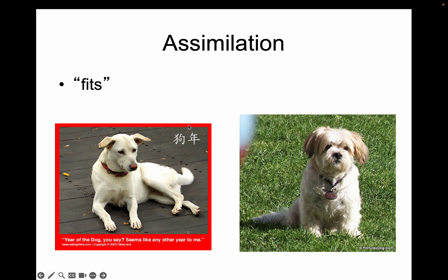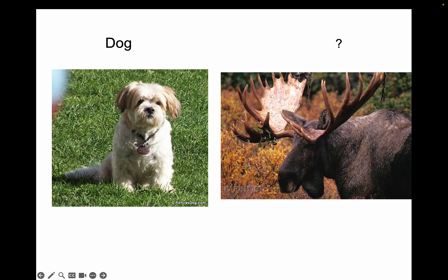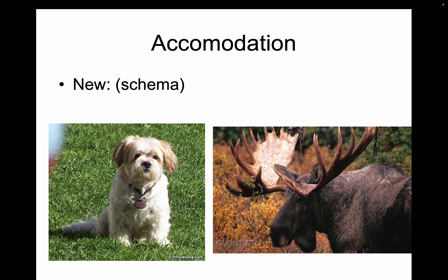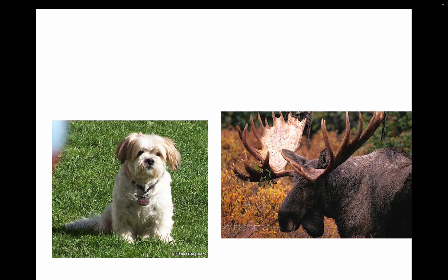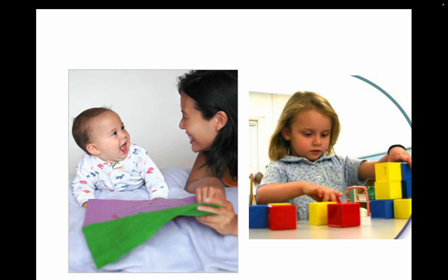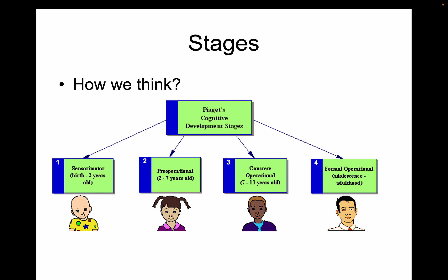Assimilation is when the new thing fits — like recognizing two different dogs as both dogs. But when a kid sees a moose, he'll say 'dog,' and it's not. He needs a new concept — that's called accommodation, when you build a new concept. Now he knows what a dog is and what a moose is. That's basic Piaget stuff.